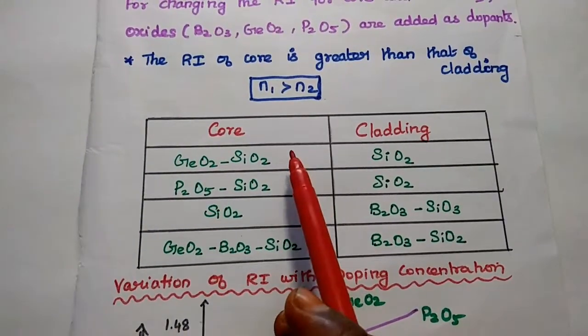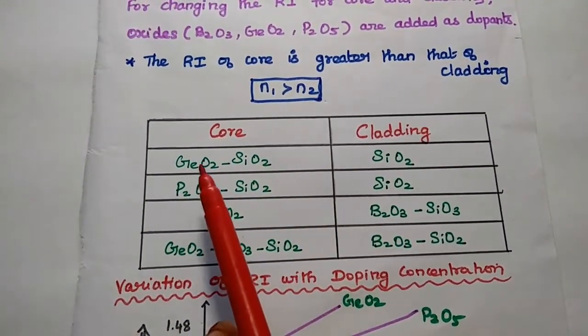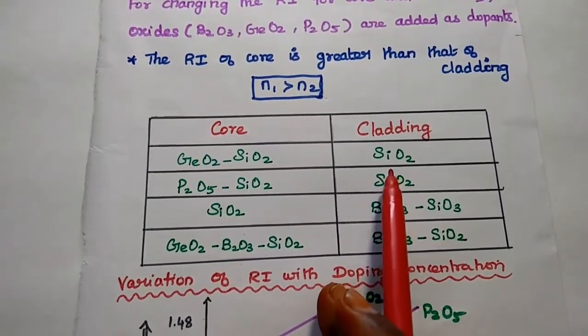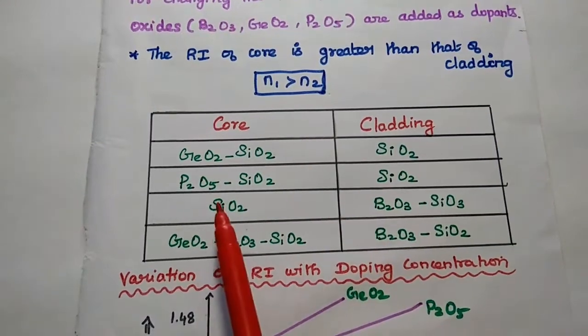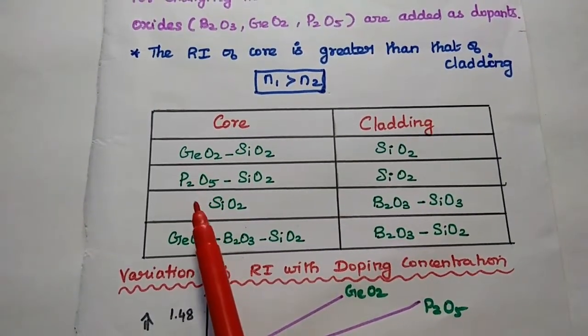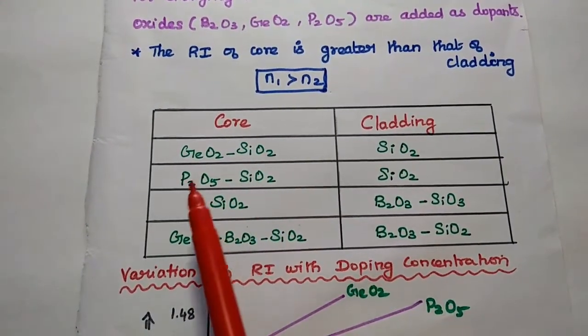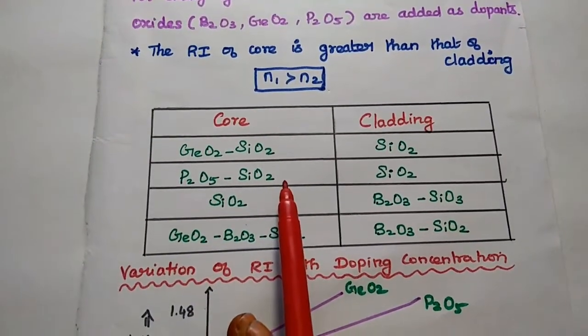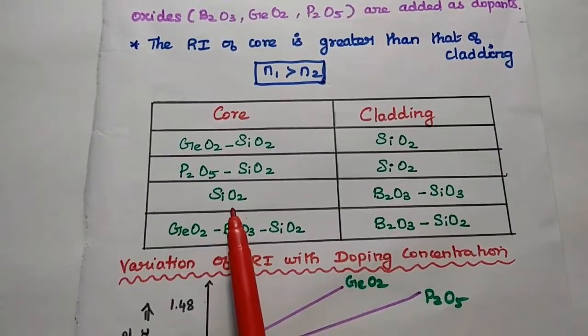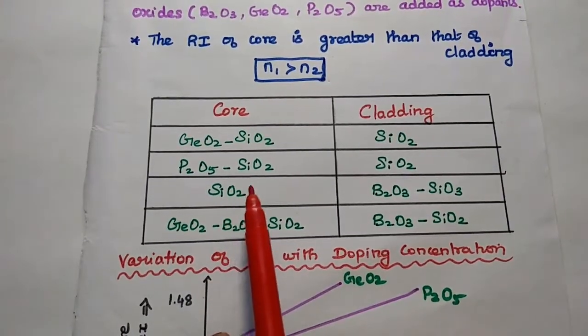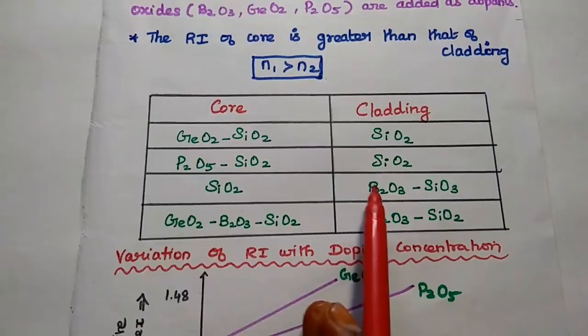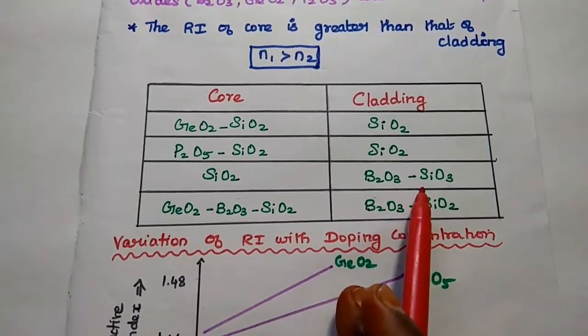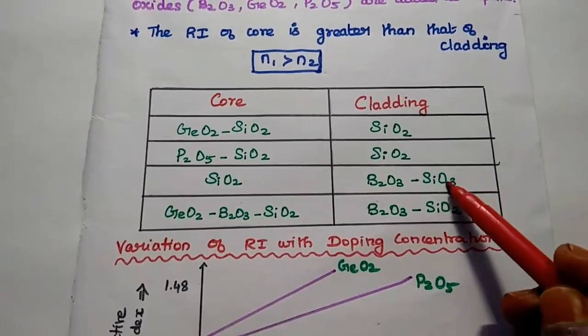So here this N1 is increased by adding this germanium dioxide. At the same time, we can maintain the cladding material as silicon dioxide. There is another example. If you want to increase the refractive index, we can add phosphorus pentoxide with this silicon dioxide. So if you are going to keep this silicon dioxide as a core material, we have to reduce the refractive index of the cladding by adding this boron trioxide with this silicon dioxide.